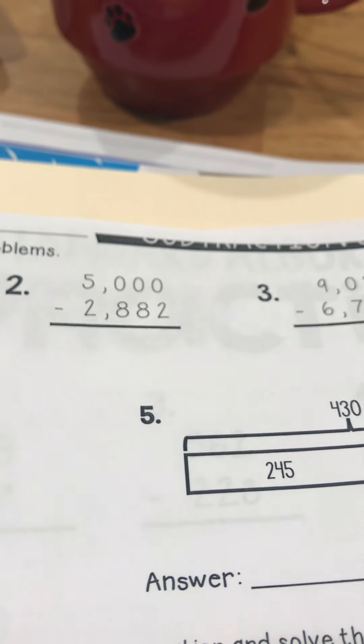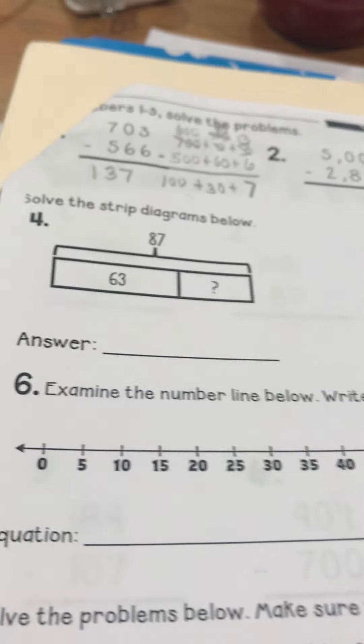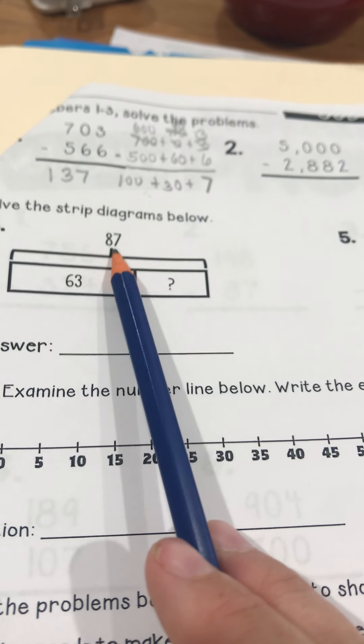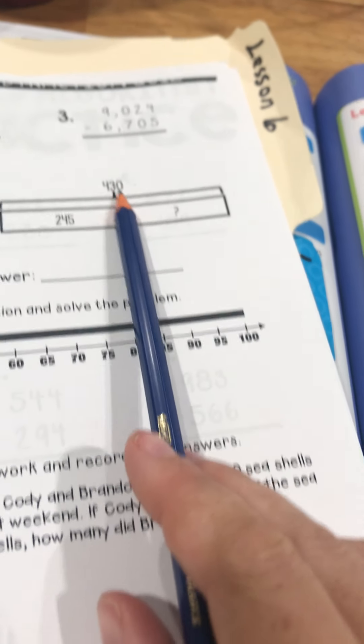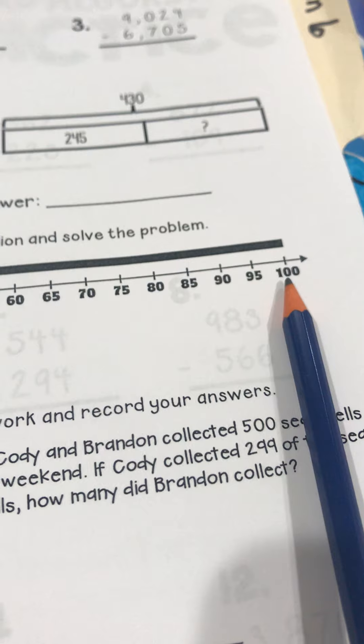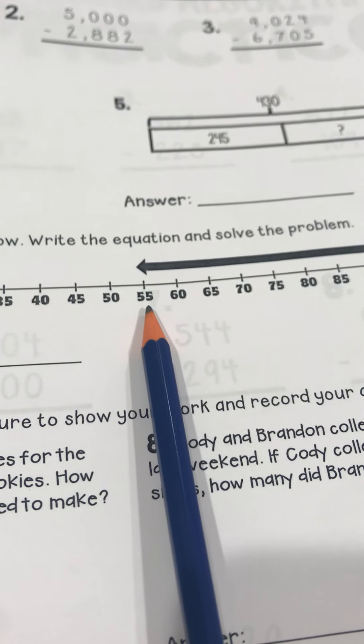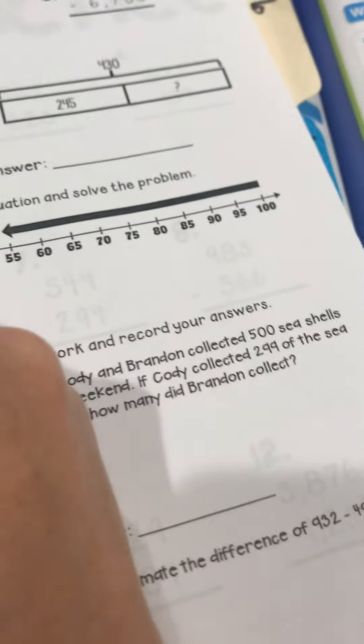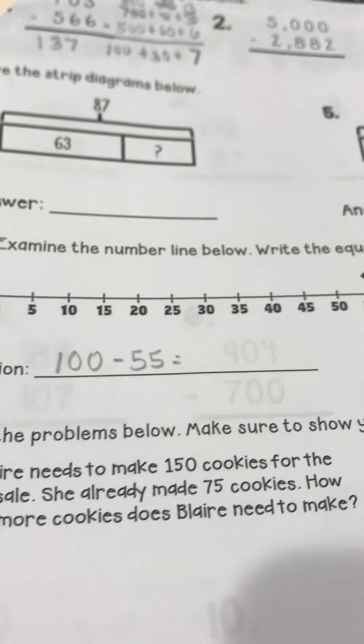Number 2, you might want to do your add-on method or just go across those zeros with traditional and same with 3. Number 4, you have a strip diagram. We know we're subtracting because our total is here. Same thing on 5, we know we're subtracting. You have a number line. So they're starting at 100 and they're going backwards to 55. So we're going to subtract 100 minus 55 and get our answer. You could even do the add-on method here, making 10.